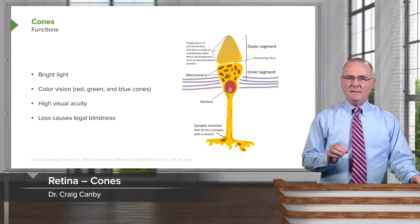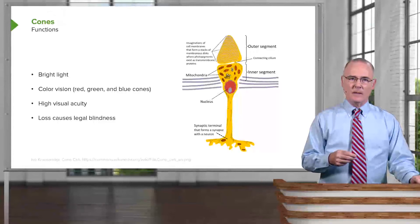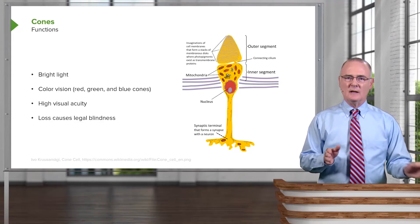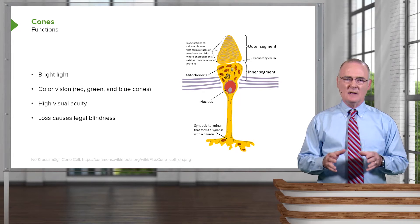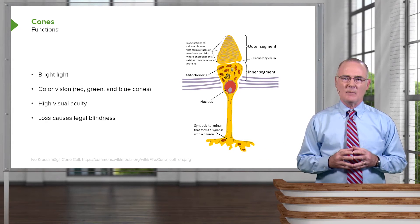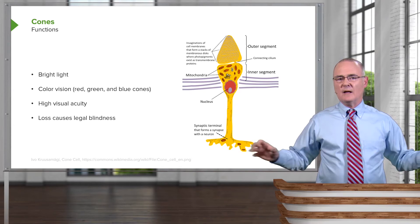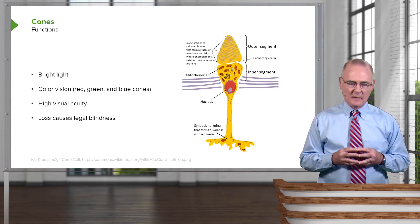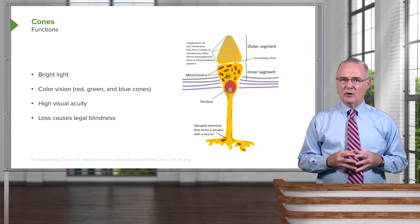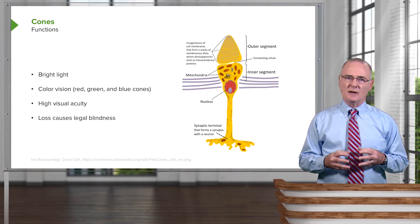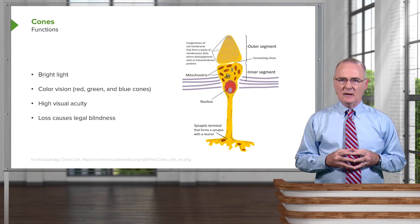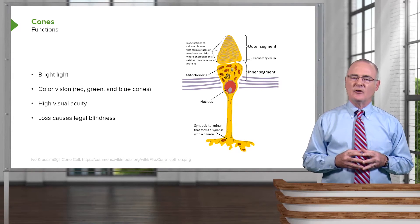Now let's describe the functions of the cones and the rods. Cones are located specifically within the fovea centralis exclusively — there are no rods at this place. As you move outside of the fovea centralis, you're within the macula lutea, where cone density starts to decrease and rod density starts to increase. Cones are necessary to operate in bright light, responsible for conferring color vision via a population of red, green, and blue cones. They are responsible for high visual acuity, and excessive loss of cones is a cause of legal blindness.